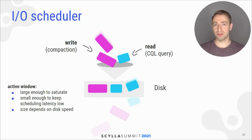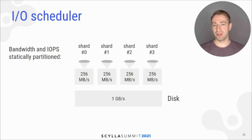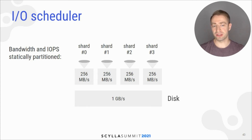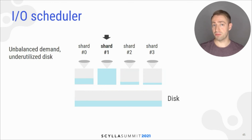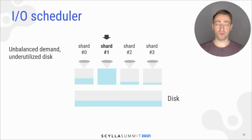To meet those guarantees, the scheduler needs to know the disk speed. The old scheduler statically partitioned the disk speed among the schedulers running on different shards. If the disk demand was balanced, the disk was fully utilized. But if the demand was unbalanced, a single shard was not able to fully utilize the disk and the disk was underutilized.